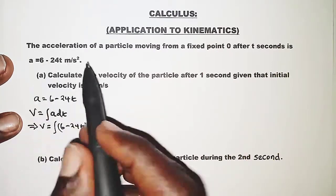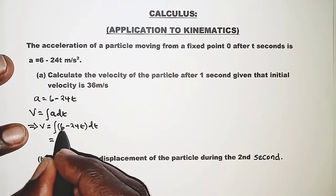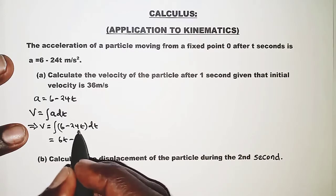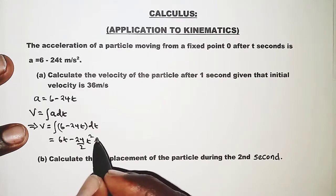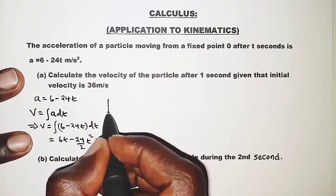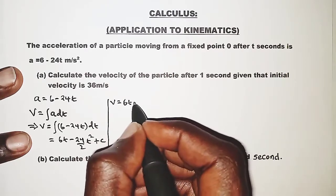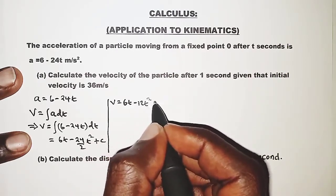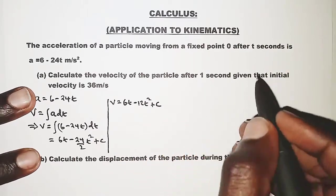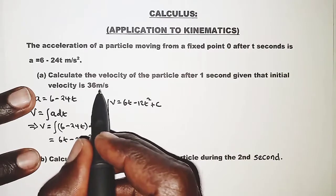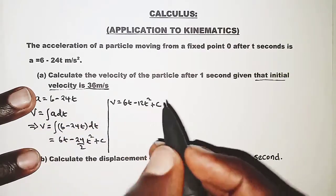Integrating gives us 6t minus 12t squared plus c. We also need to use the fact that the initial velocity is 36 meters per second. This information will help us get the value of c.